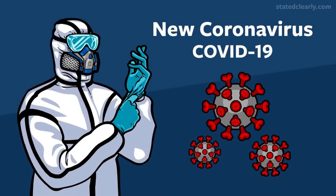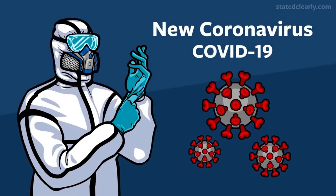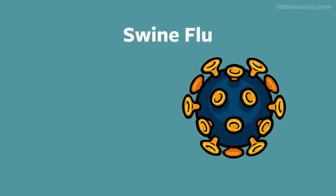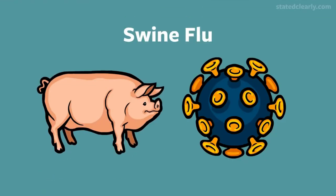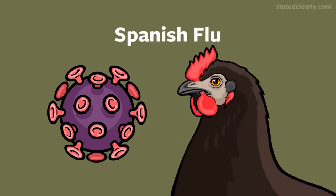Coronaviruses are not the only animal viruses that can adapt to new hosts. HIV spilled over from chimps, most likely when someone cut themselves while preparing chimp meat for dinner. The swine flu came partly from pigs — we think it evolved through a recombination of a pig virus and a bird virus. The 1918 Spanish flu, the big one that devastated populations around the world, may have spilled over from chickens.